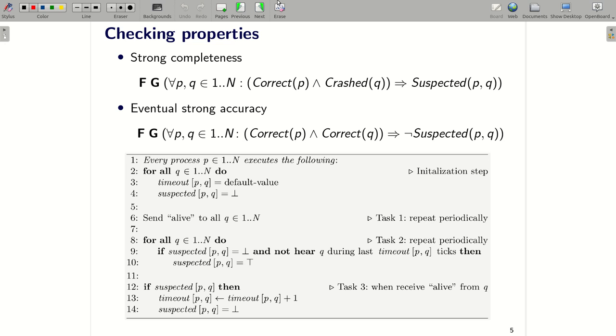Remind that our goal is to detect all crashes in the system. So the algorithm should satisfy the two following properties, strong completeness and eventual strong accuracy. These properties are formalized in linear temporal logic and F and G here, they are temporal operators. The first formula, strong completeness, means that every crashed process is eventually and permanently suspected by every correct process. The second formula, eventual strong accuracy, is that there is a time after which all correct processes are not suspected by any correct process.